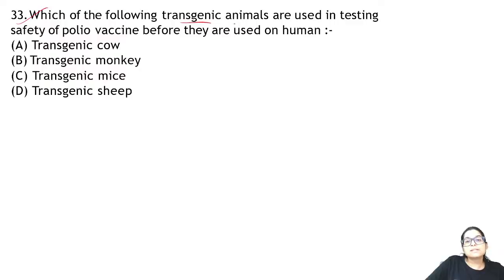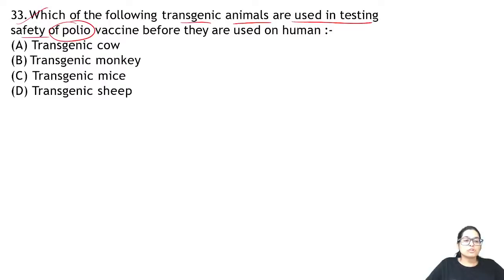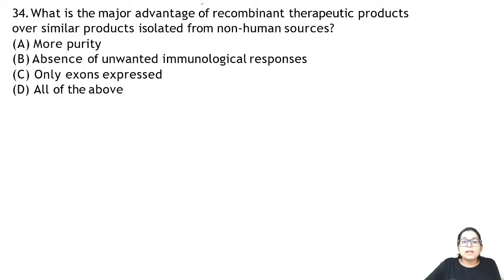Zoology Question 33: which transgenic animals are used in testing of the polio vaccine? The testing of polio vaccine is done in transgenic mice before giving to humans.